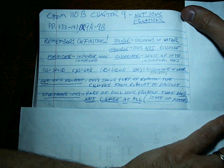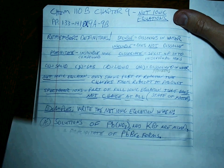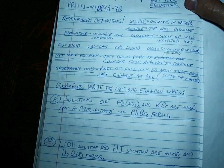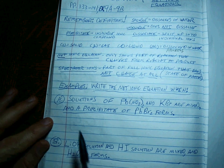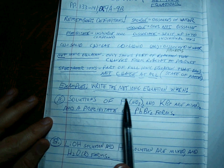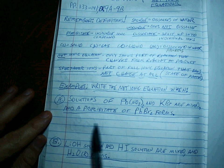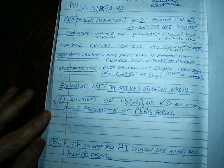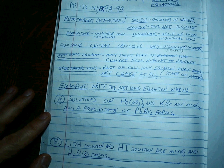We're going to do two problems first with a pause, and then we'll do two more problems with a pause. Here are the first two. Write the net ionic equation: for A, solutions of Pb(NO₃)₂ and KBr are mixed, and the precipitate of PbBr₂ forms. For B, LiOH solution and HI solution are mixed, and H₂O liquid forms. Go ahead and hit pause.